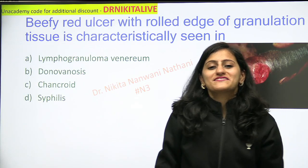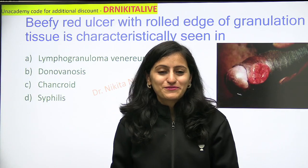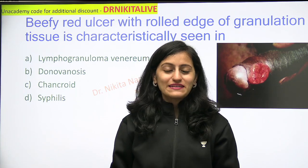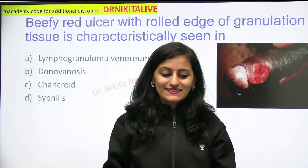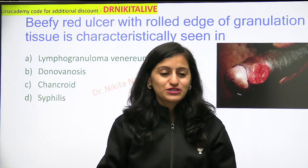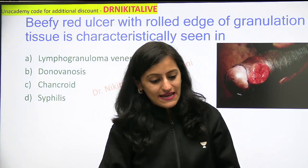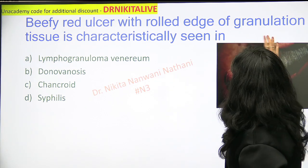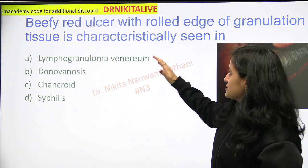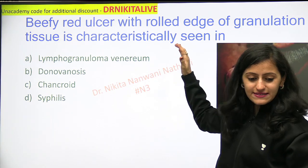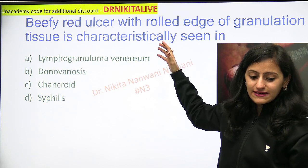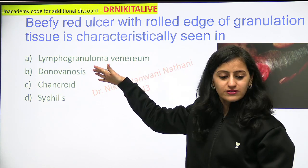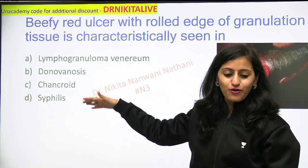Hello everyone, this is Dr. Nikita here with another mnemonic of the day — very important and a recently asked question in the TG exam. Beefy red ulcer with rolled edge of granulation tissue is characteristically seen in: LGV, Donovanosis, chancroid, or syphilis?